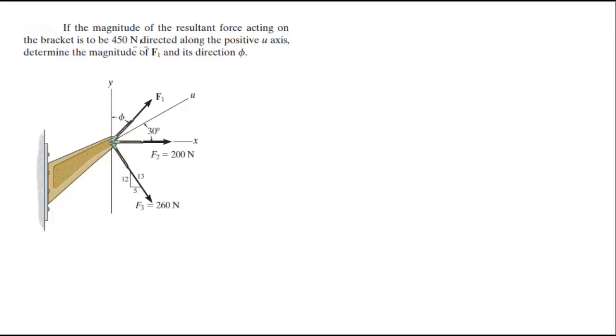Alright guys, now we're going to do this problem that says if the magnitude of the resultant force acting on the bracket is to be 415 newtons directed along this axis, determine the magnitude of F1 and its direction phi.